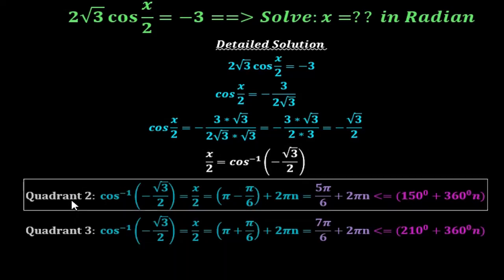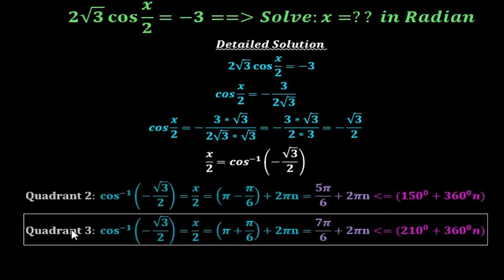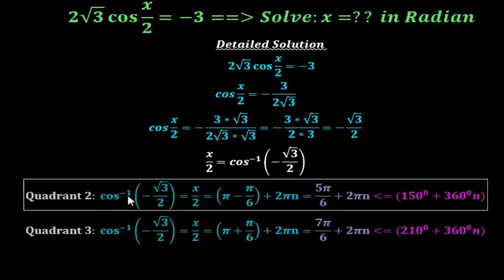Cosine is negative in quadrant 2 and quadrant 3. In quadrant 2, cos⁻¹(−√3/2) gives x/2 = π − π/6 = 5π/6, and all its coterminals: 5π/6 + 2πn. In degrees, that is 150° + 360°n.